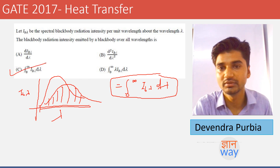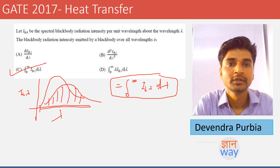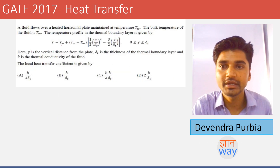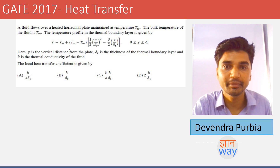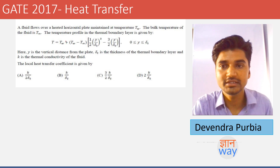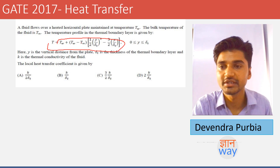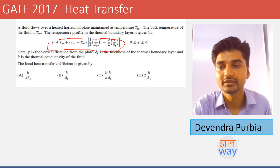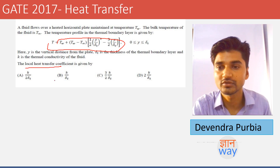This integration represents the area under the curve corresponding to black body radiation intensity for all wavelengths, so option C is correct. The next question involves a horizontal fluid flowing over a horizontal plate maintained at temperature T_w, with bulk fluid temperature T_infinity. A temperature profile equation is given where y is the vertical distance from the plate and delta is the thermal boundary layer thickness, and we must find the local heat transfer coefficient.